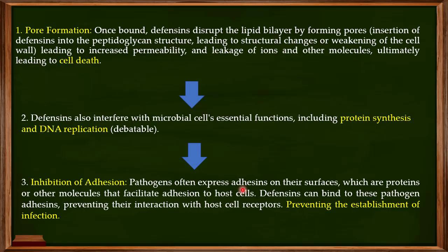Instead of the pathogen using its adhesins to interact with host cell receptors, the defensin proteins interact with the adhesins. Once defensins bind to the adhesins, those adhesins cannot interact with host cell surface receptors. This prevents the establishment of infection, because for infection to be established these pathogens must interact with host cells, and defensins are blocking those interactions.